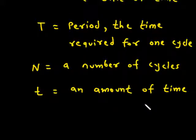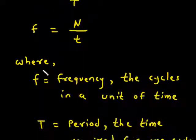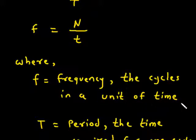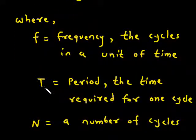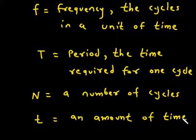Frequency formula: F is equal to 1 upon T. F is equal to N upon T. Where F is equal to frequency — the cycles in the unit of time. T is equal to period — the time required for 1 cycle. N is equal to the number of cycles. T is equal to an amount of time.